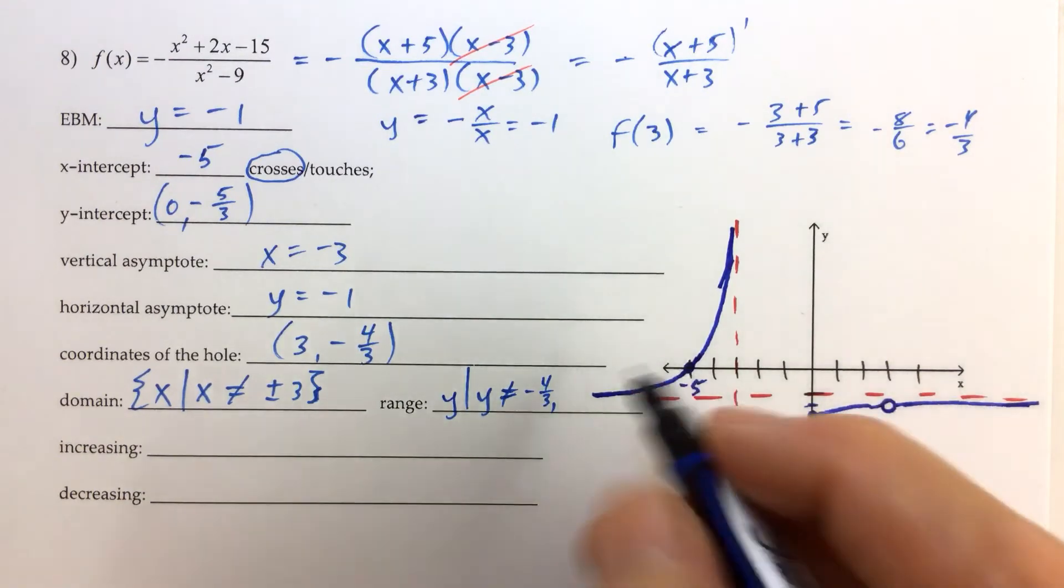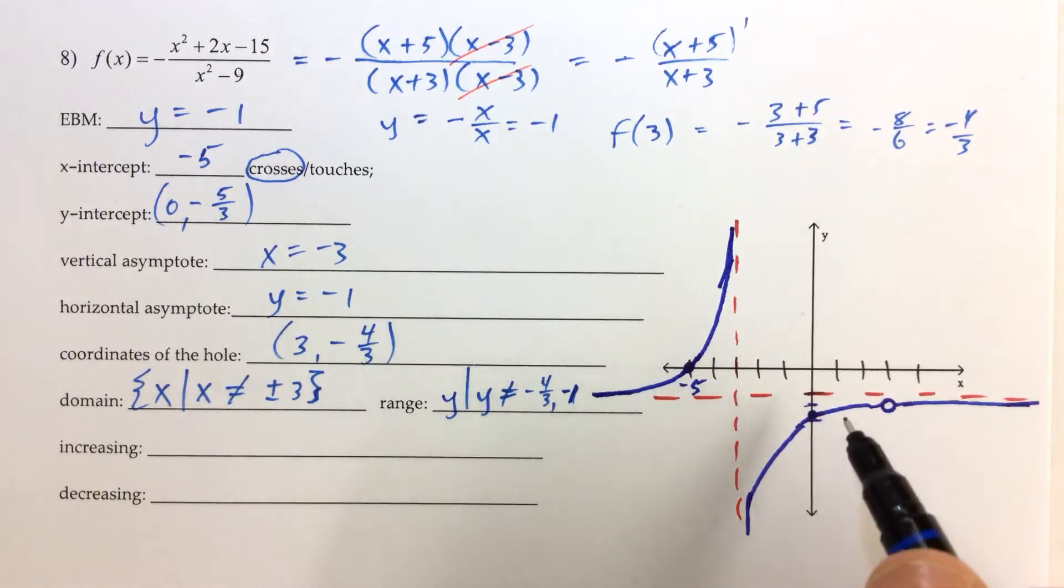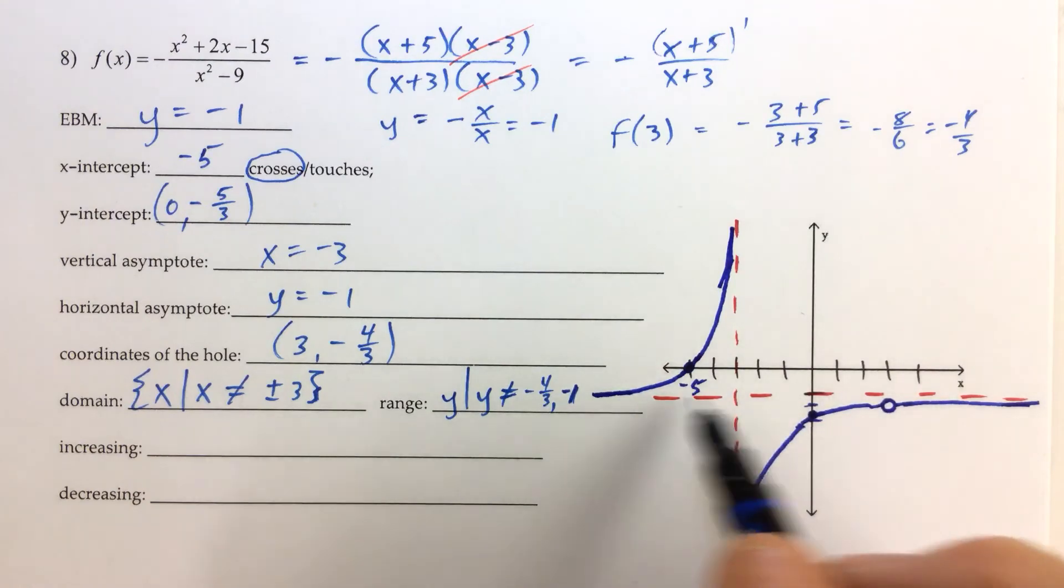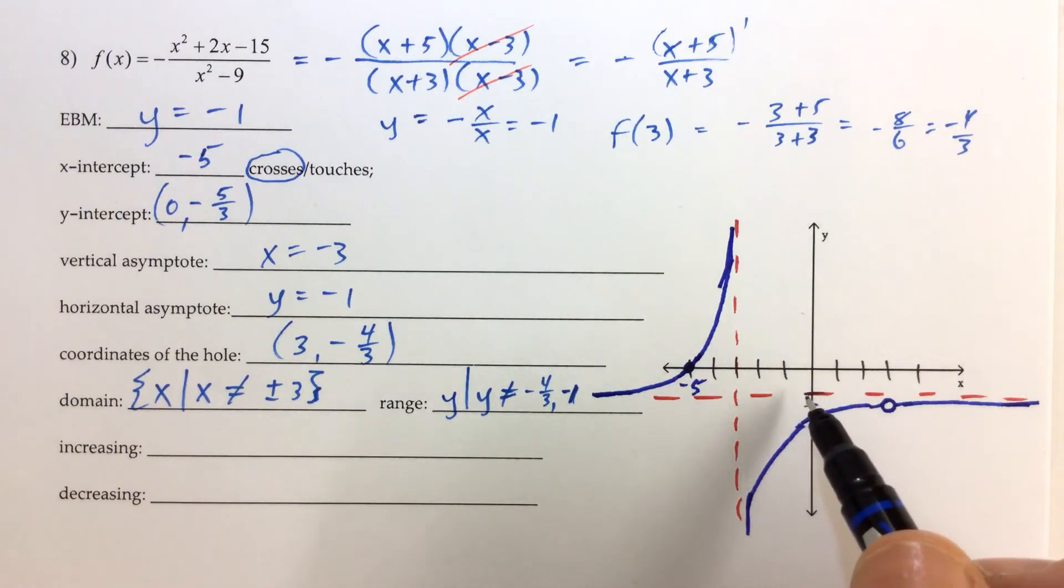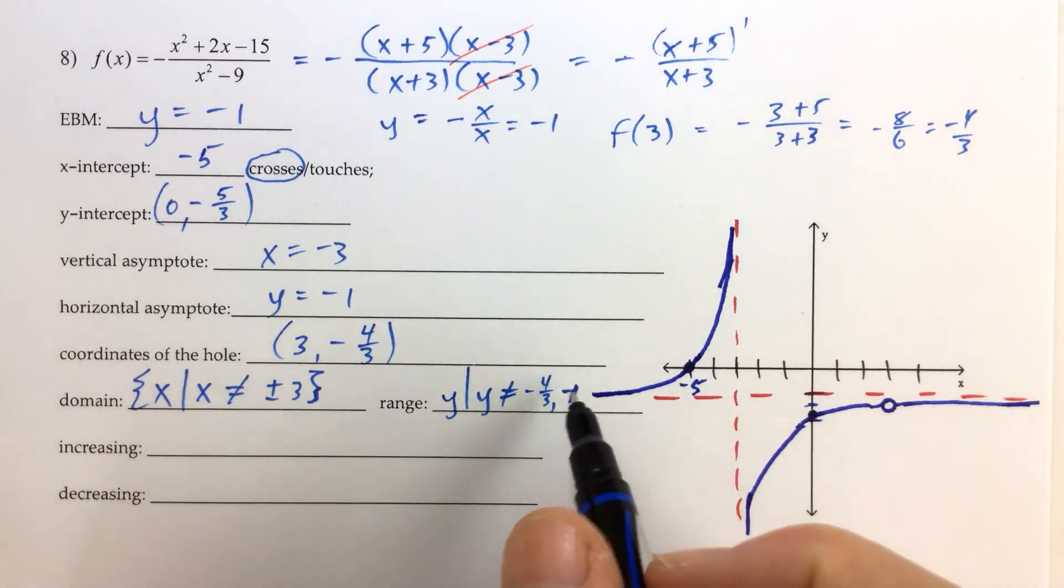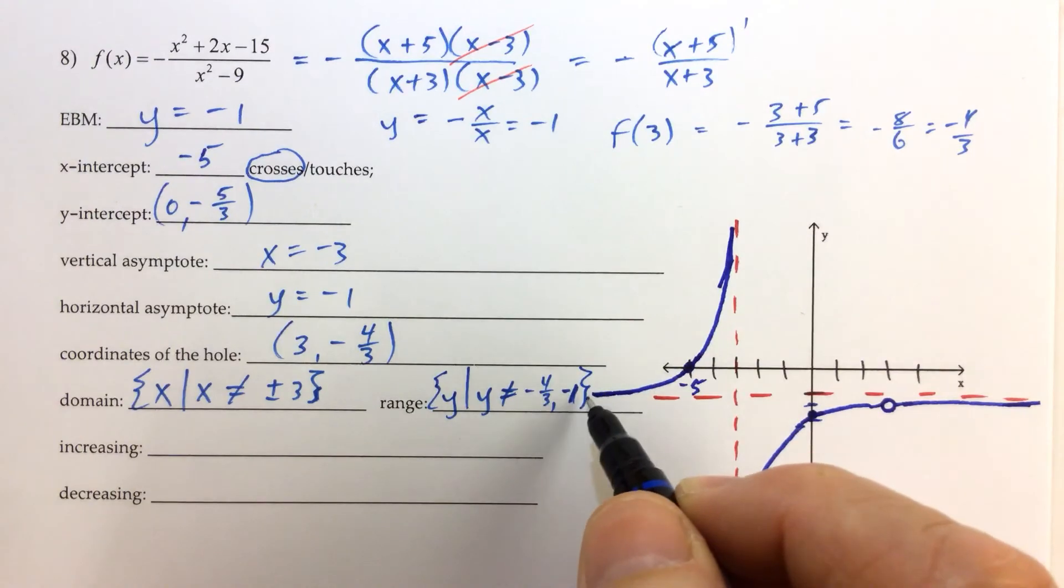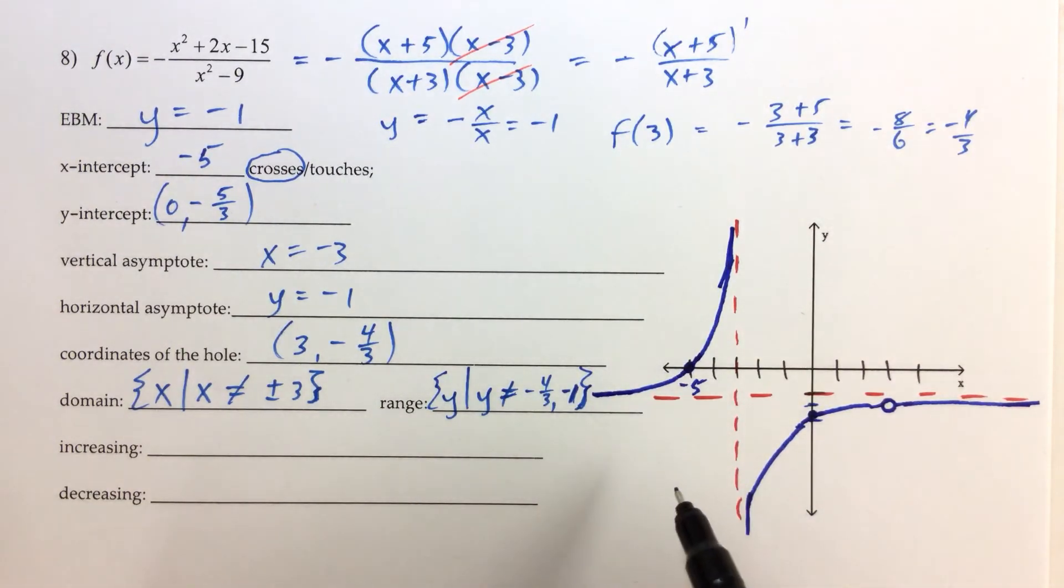And then we have our horizontal asymptote at negative 1. The y coordinate, the y values never hit negative 1. And sometimes the graph of a rational function can cross a horizontal asymptote, but we see this particular graph does not cross that horizontal line. So, we have our two values of y that we are not allowing to be a part of the range. All other real numbers are a part of the range.